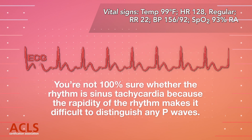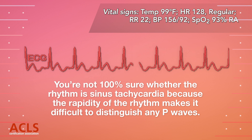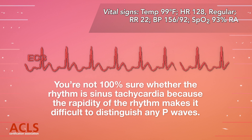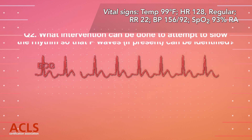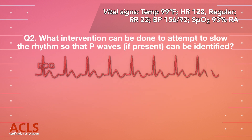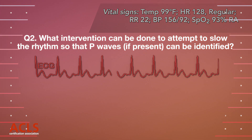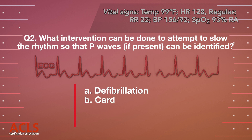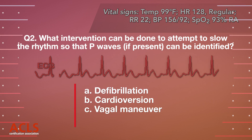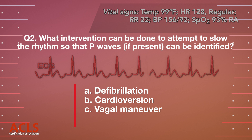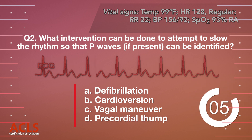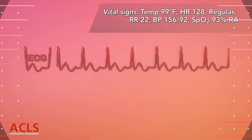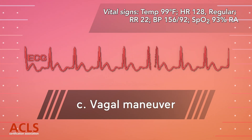You're not 100 percent sure whether the rhythm is sinus tachycardia because the rapidity of the rhythm makes it difficult to distinguish any P waves. What intervention can be done to attempt to slow the rhythm so that P waves, if present, can be identified? A, B, C, D. Correct answer: C. Vagal maneuver.